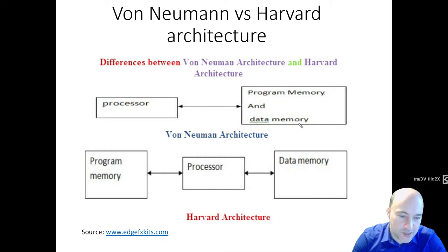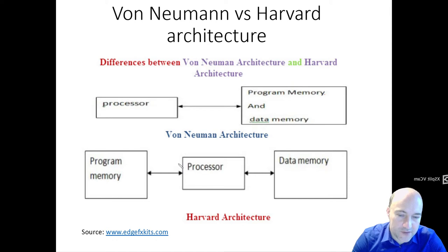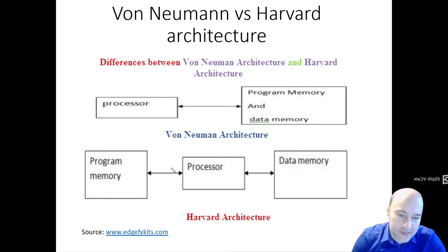The advantage of Von Neumann architecture is that you have just one data bus, requiring fewer pins. With Harvard architecture you have independent buses for program memory and data memory, making it faster because you can read the program and read the data at the same time. Today's microcontrollers use something in between, combining both advantages. Typically you have an address bus, a data bus, and control signals that tell you whether you are reading from the data memory or from the program memory.